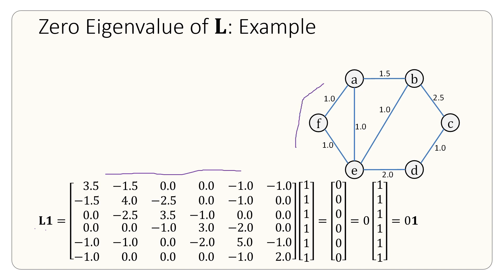We already noted that the sum of all elements in each row of L adds up to 0. 3.5 minus 1.5, this is 0, 0, minus 1.0, minus 1.0 is equal to 0. This 0. Similarly, if you add up negative 1.5, 4.0, negative 2.5, negative 1.0, again you will get a 0.